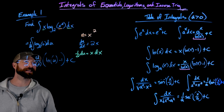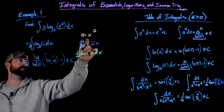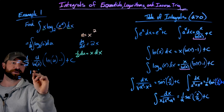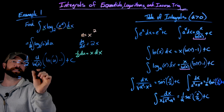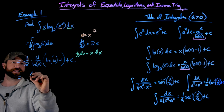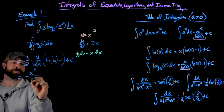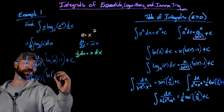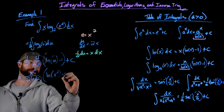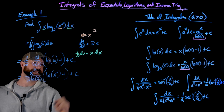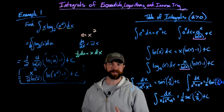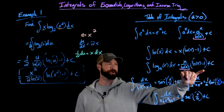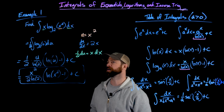Replacing u with x squared, we get x squared over 2 natural log of 2, times the natural log of x squared minus 1, plus c. There's really nothing new here — just using the substitution rule and this logarithm property, which is probably the first time we've been using it so far.